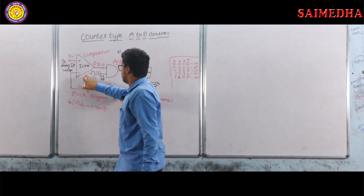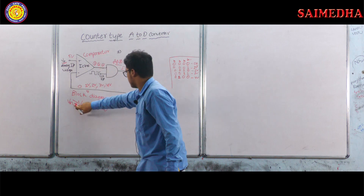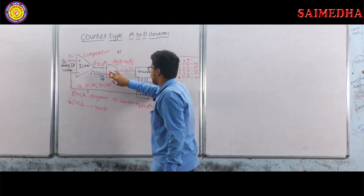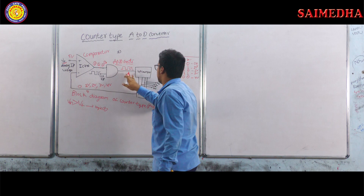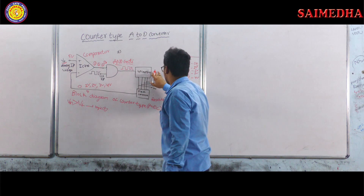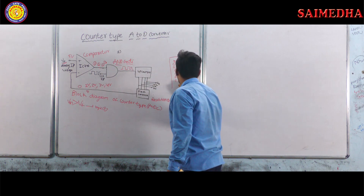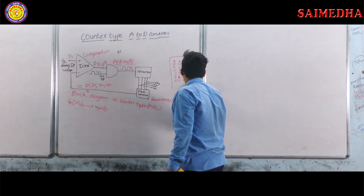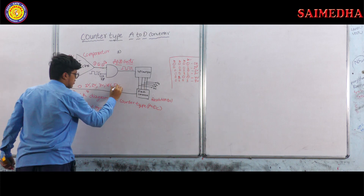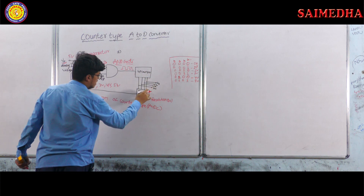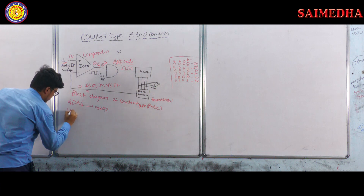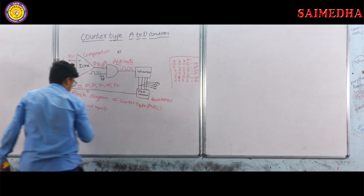The four volts is fed back to IC741 comparator. Since five volts is still greater than four volts, this condition satisfies again and we get logic one. The AND gate multiplies the clock input with logic one, giving the clock output to the up counter. The up counter is incremented by one again, and the D to A converter now produces five volts.